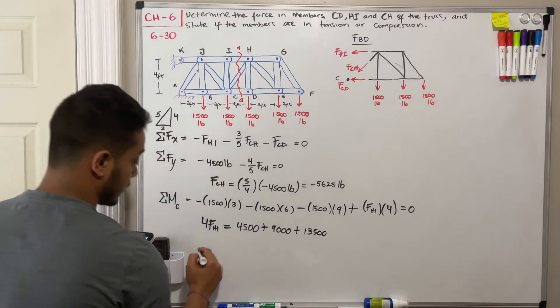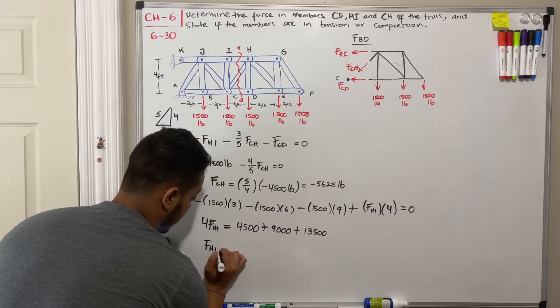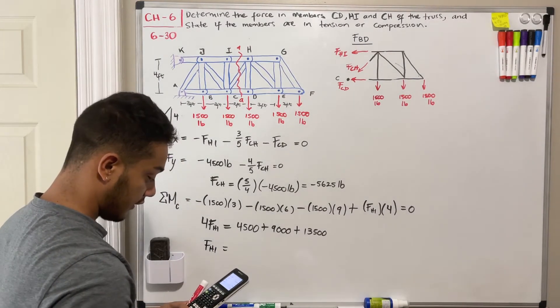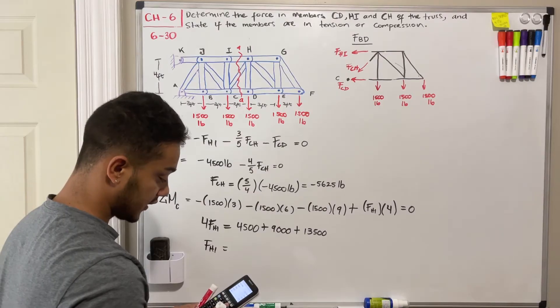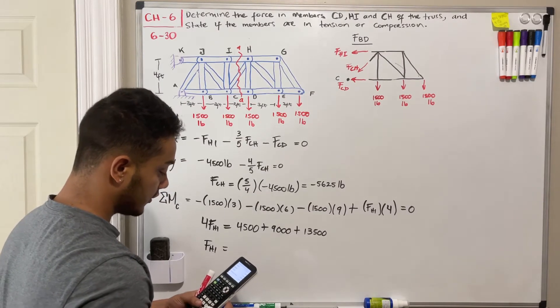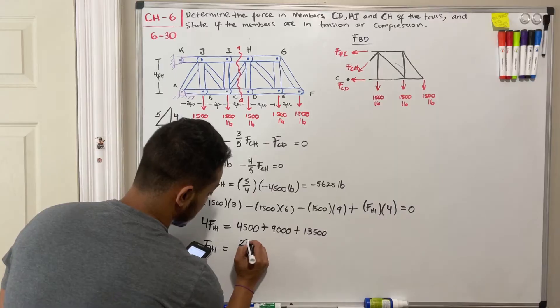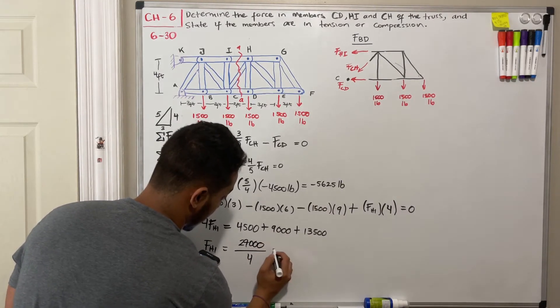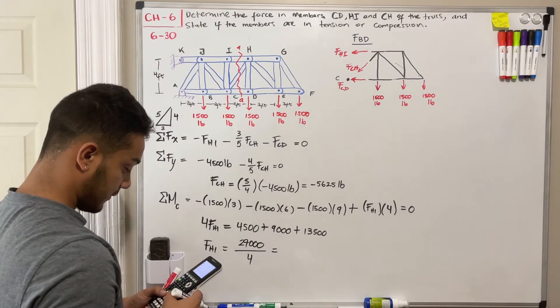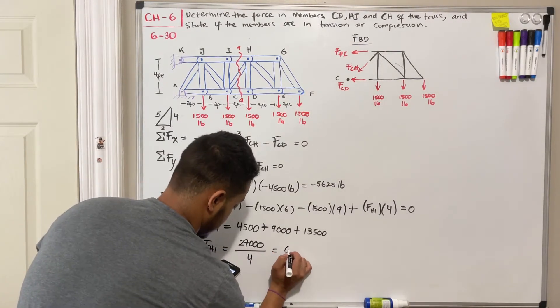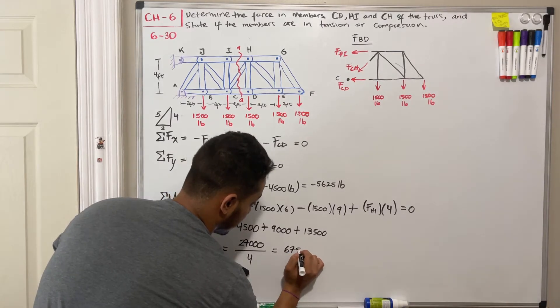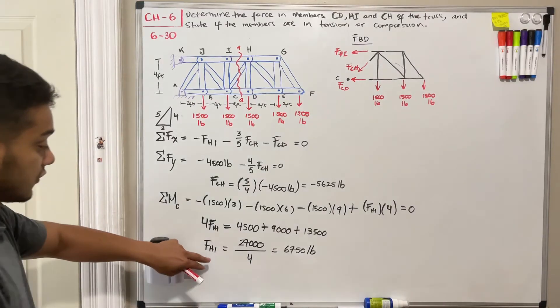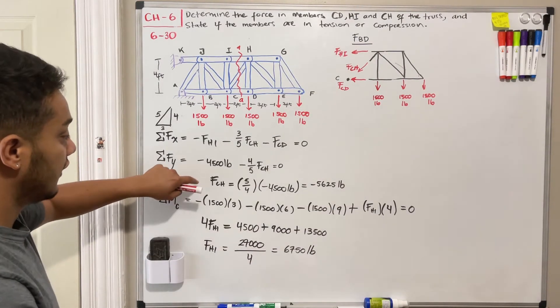Okay. So finally, if we add them up and we divide by 4, what do we get? So let's add these guys up. We got 4500 plus 9000 plus 13500. That will give me 27000 divided by 4. And what is that equal to? So divided by 4, we get 6750 pounds. Okay. So we got our results for FHI and FCH.